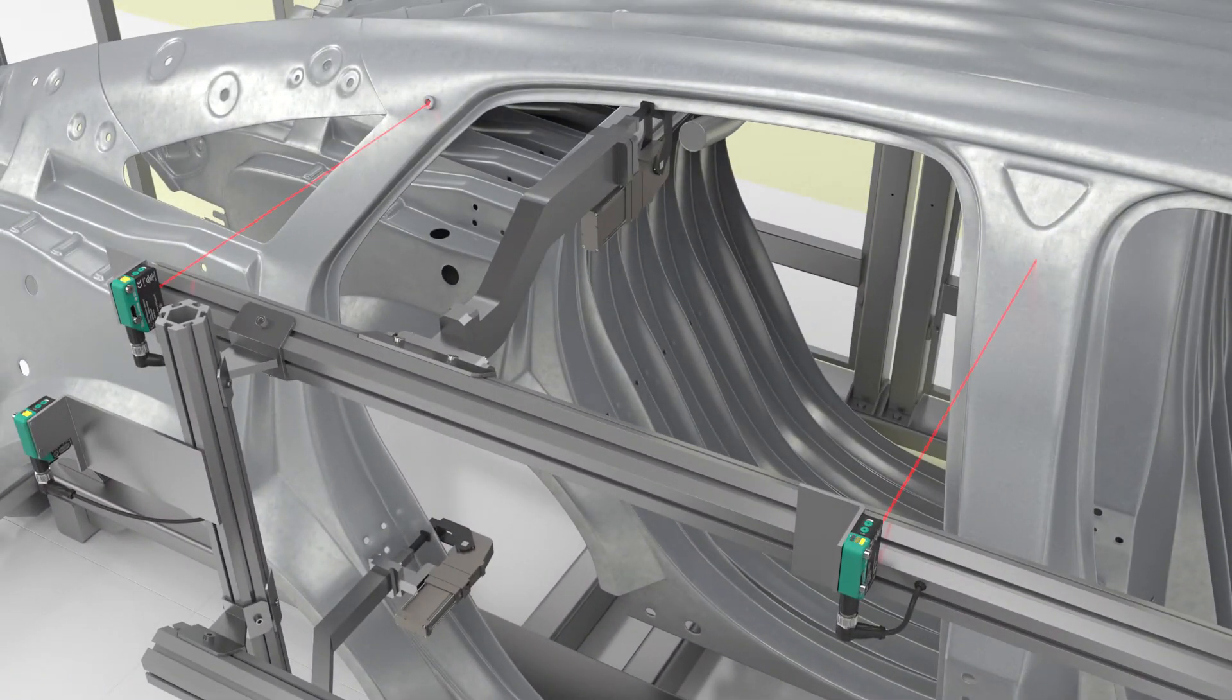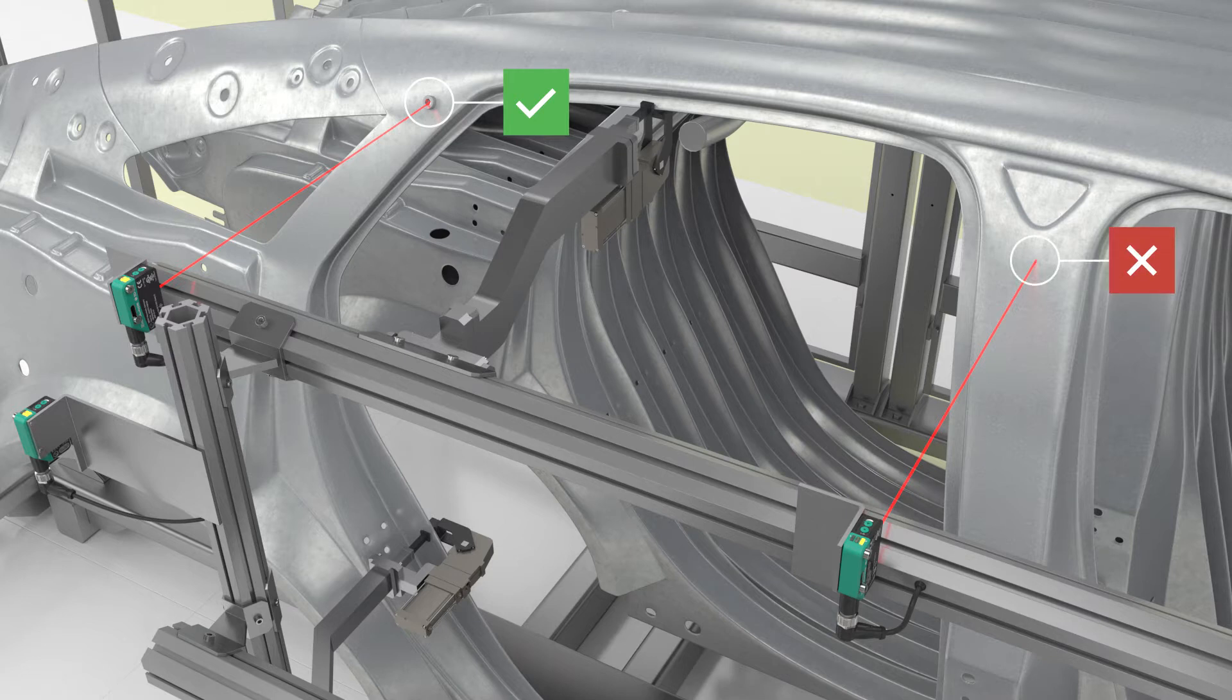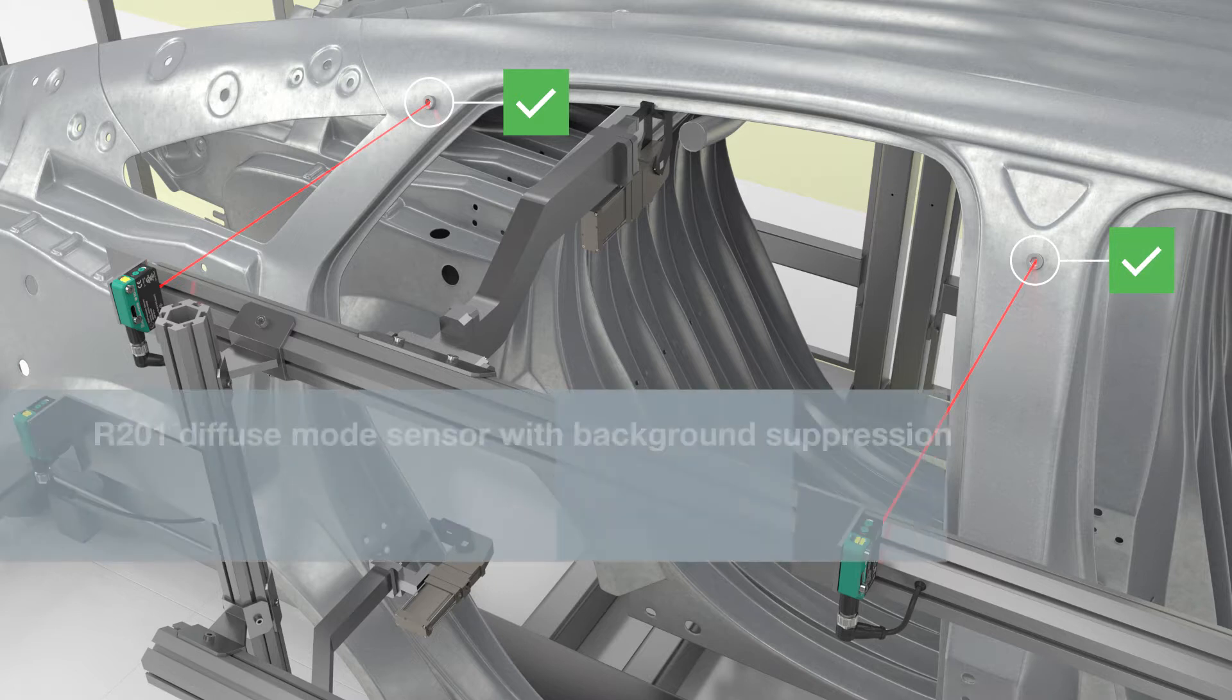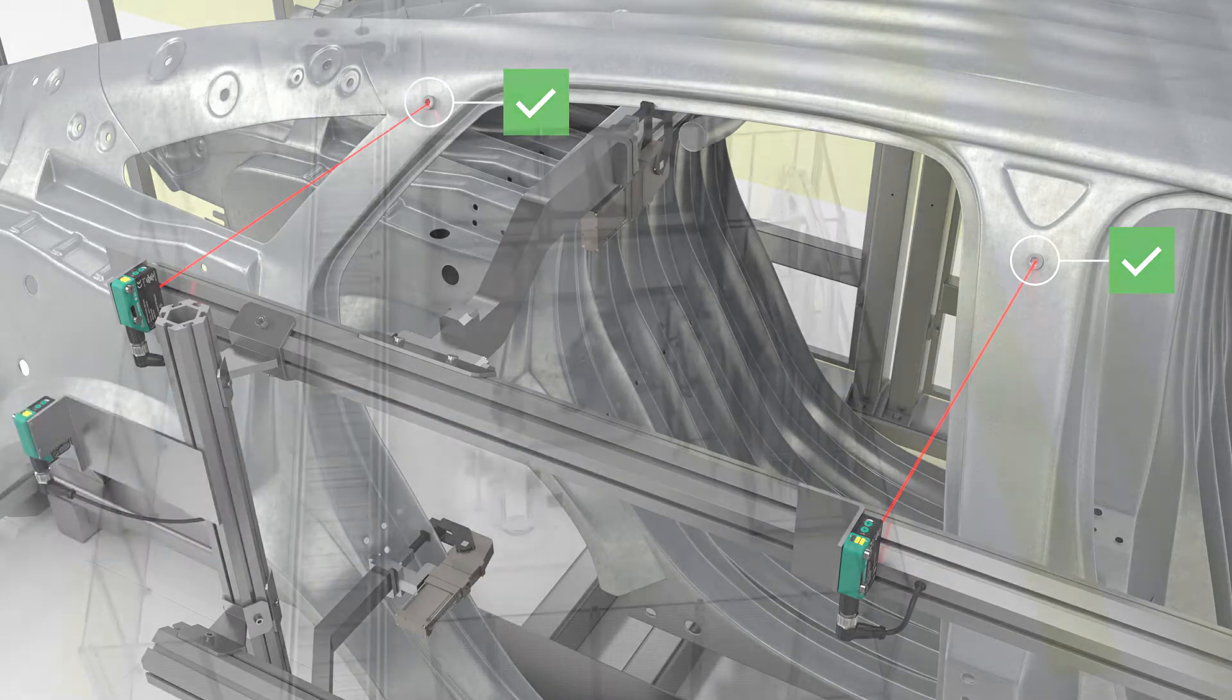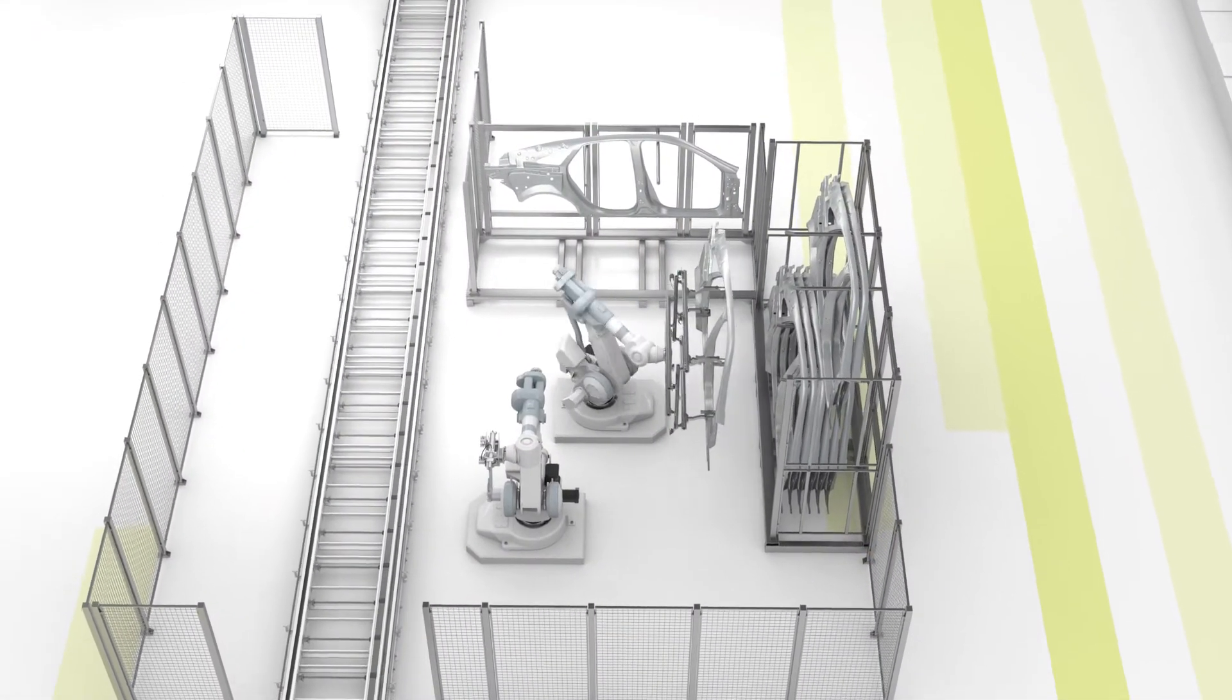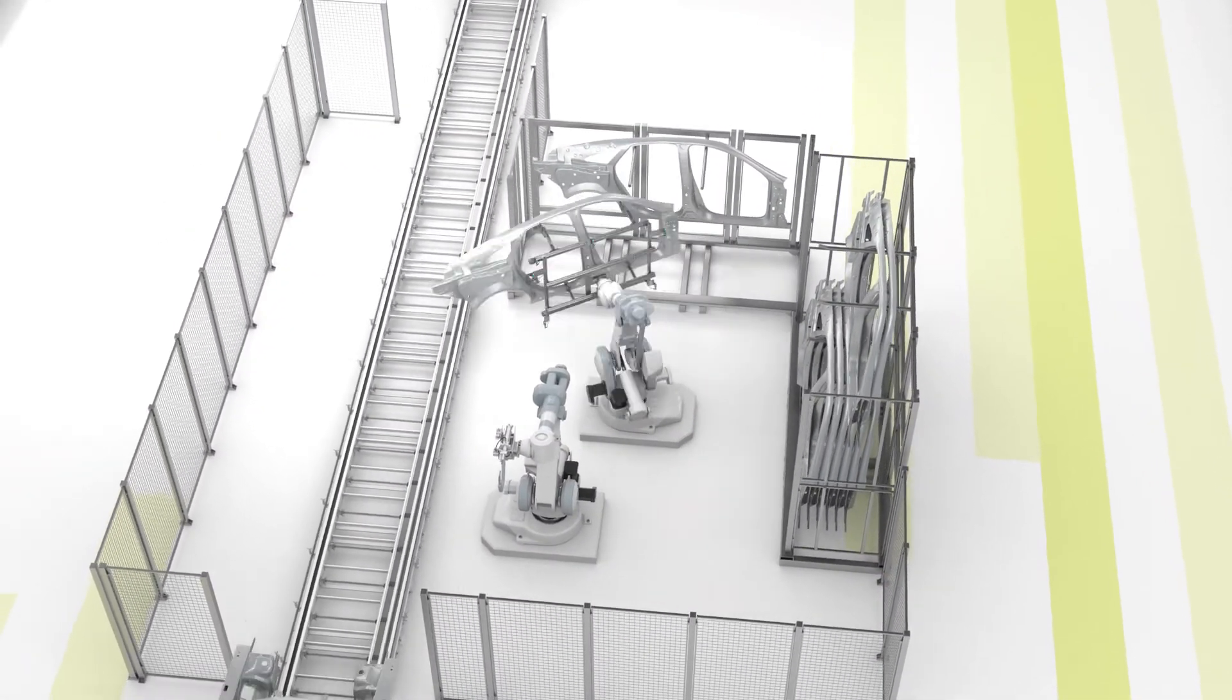Another two R201 sensors, in this case diffuse mode sensors with background suppression, check the workpiece for completeness. DuraBeam laser technology and the small circular light spot detect small objects, such as screws, to avoid delays in the process.